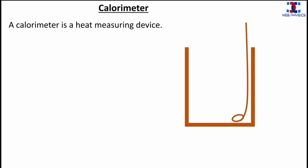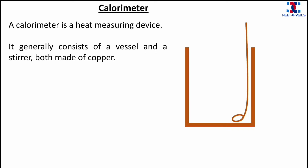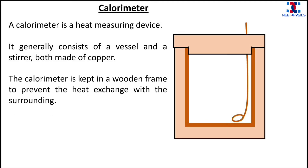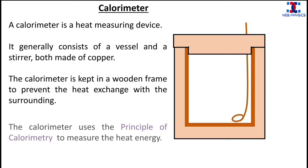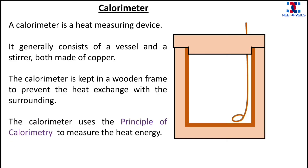A calorimeter is a heat measuring device. It generally consists of a vessel and a stirrer, both made of copper. The calorimeter is kept in a wooden frame to prevent heat exchange with the surrounding.